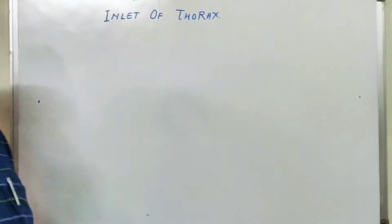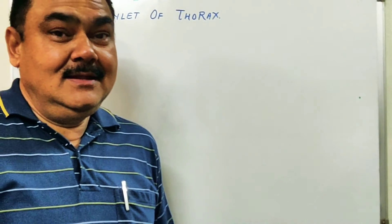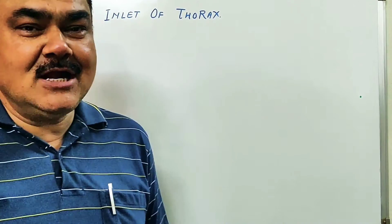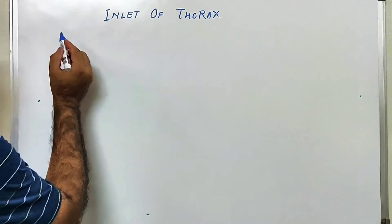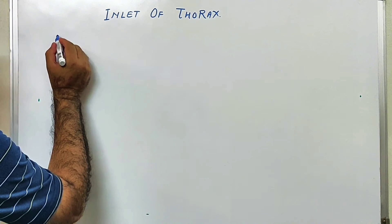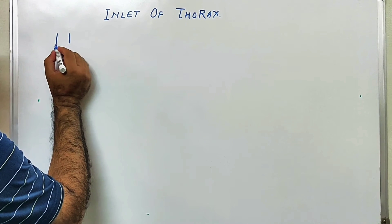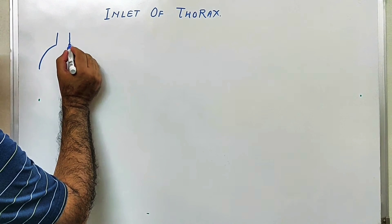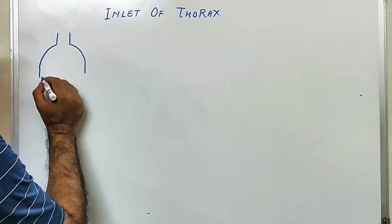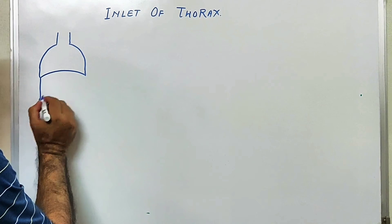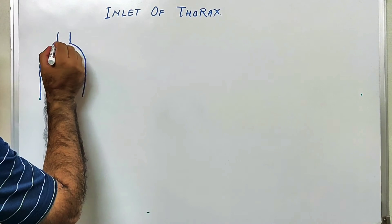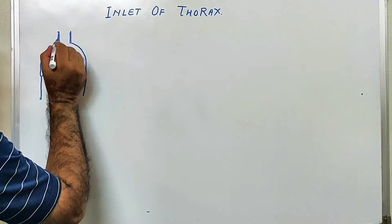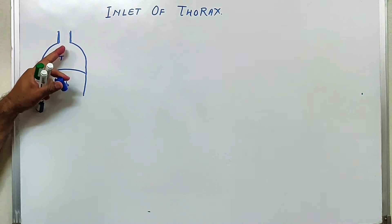We'll discuss the inlet of the thorax. This is the upper narrow part of the thorax which is continuous with the neck. Here is the neck, here is the thorax, and this portion is the abdomen.